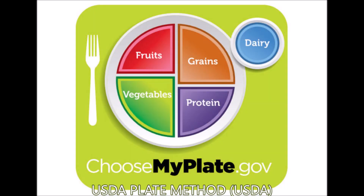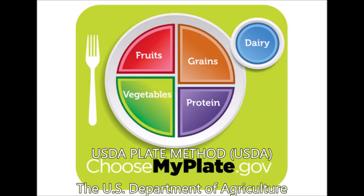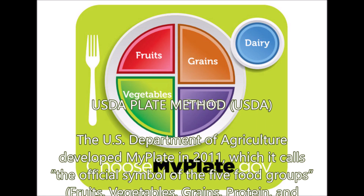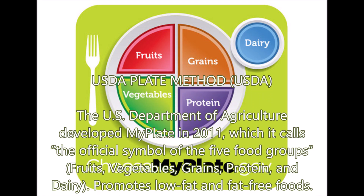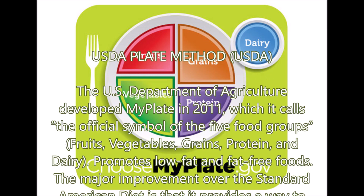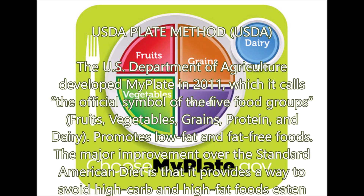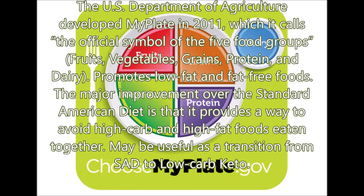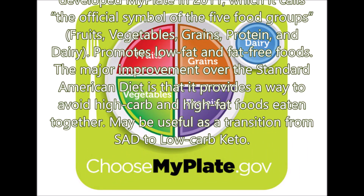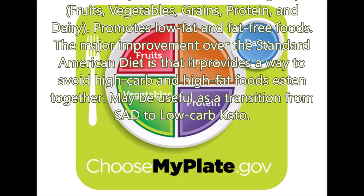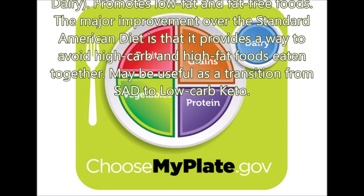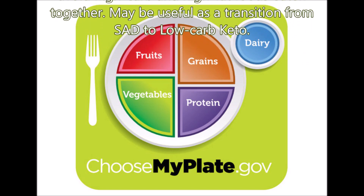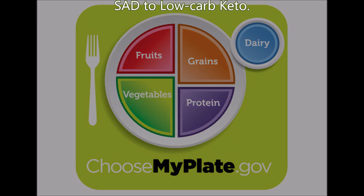USDA Plate Method: The U.S. Department of Agriculture developed MyPlate in 2011, which it calls the official symbol of the five food groups — fruits, vegetables, grains, protein, and dairy. Promotes low-fat and fat-free foods. The major improvement over the SAD is that it provides a way to avoid high-carb and high-fat foods eaten together. May be useful as a transition from SAD to low-carb keto.